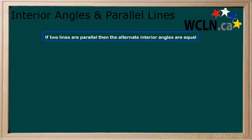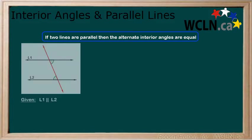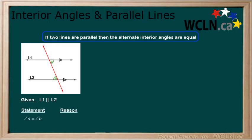First, if the lines are parallel then the alternate interior angles are equal. Here, we show that the two lines are parallel with the two arrows drawn on the lines pointing the same direction. We can say that both sets of alternate interior angles are equal because the lines creating them are parallel.